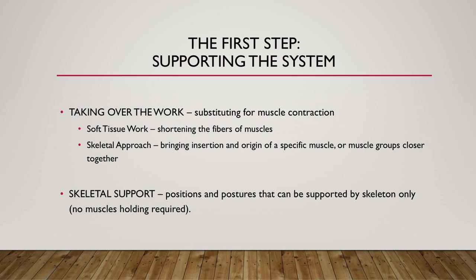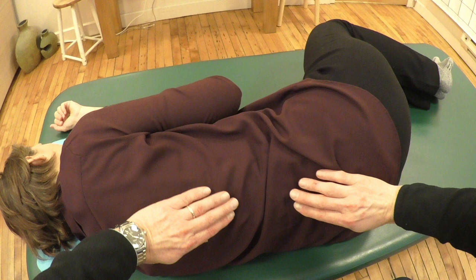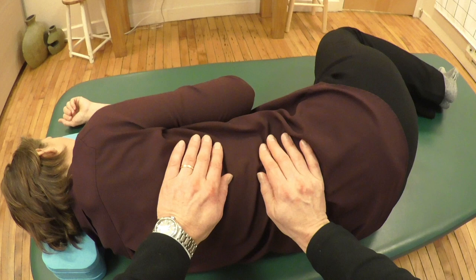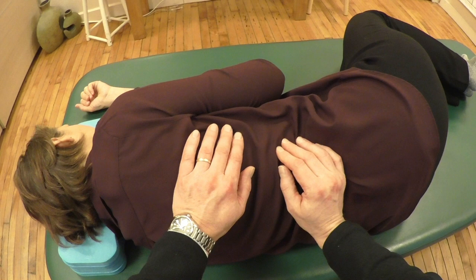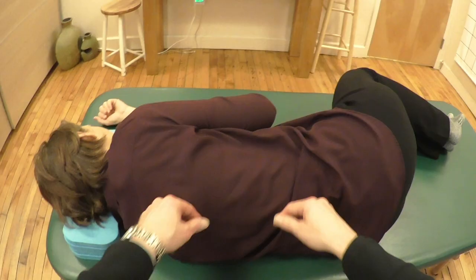The first step in functional integration is to support, and that supporting of the system of the person can happen in a few ways. One is by taking over the work of muscles — in other words, substituting for muscle contraction. So with our hands, through soft tissue work, we begin to very gently shorten the fibers of muscles. For that, of course, we need to know the alignment of fibers of particular muscles that are either in spasm or in excessive tension.